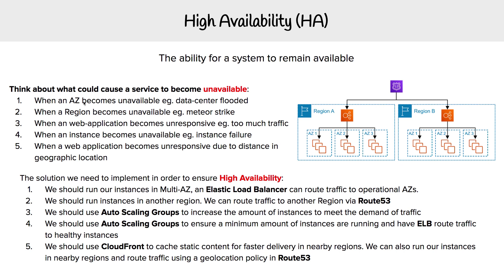Starting with scenario one: when an availability zone becomes unavailable. An AZ is just a data center, so you could imagine a data center becoming flooded, and now all the servers there are not operational. You need to have EC2 instances in another data center. To route traffic from one AZ to another, we use an elastic load balancer, so that we can be multi-AZ.